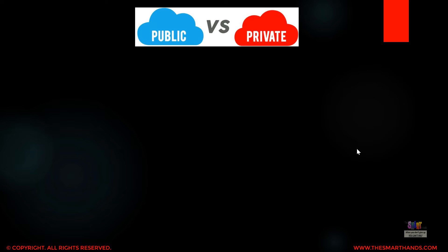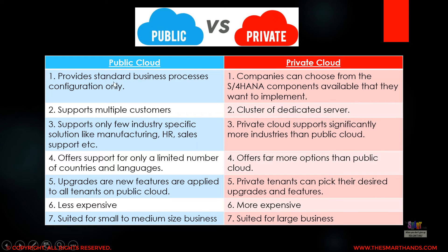Now we'll discuss the difference between public cloud and private cloud. Public cloud is where you share the system or cloud server with other customers, whereas private cloud is a dedicated server. Looking at the comparison: public cloud provides standard business processes and configuration only, whereas private cloud allows companies to choose from available S/4HANA components they want to implement.